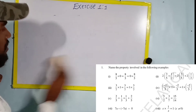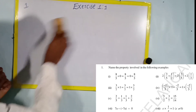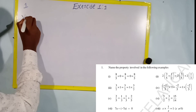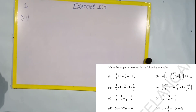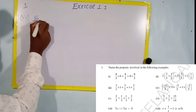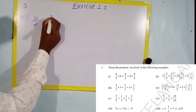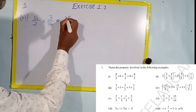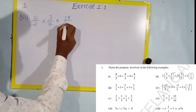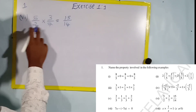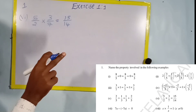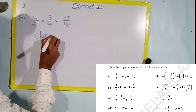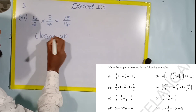Sixth one: five into five by two into three by seven equals fifteen by fourteen. Five times three equals fifteen, two times seven equals fourteen. This is the closure property under multiplication.